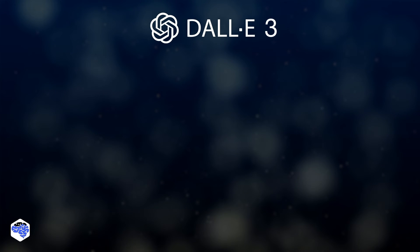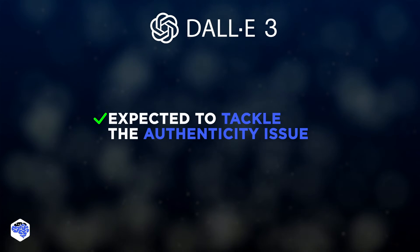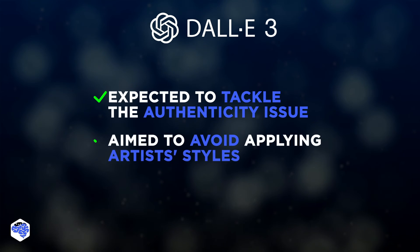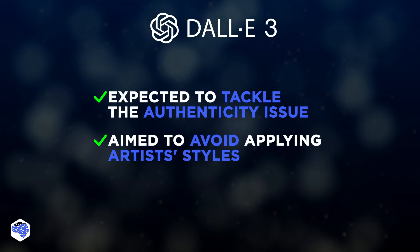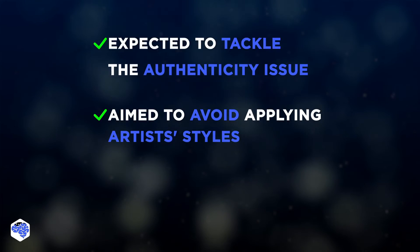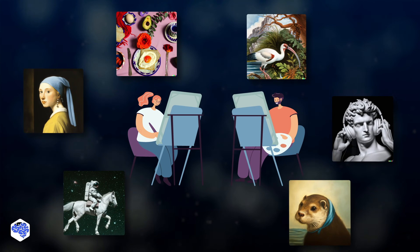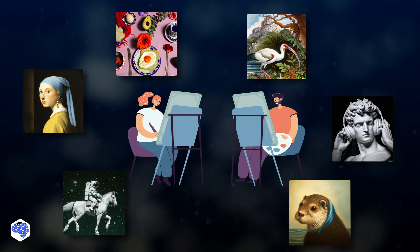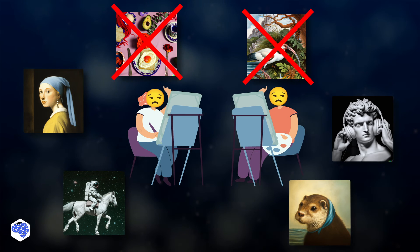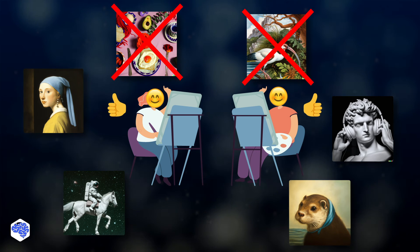DALL-E 3 is also expected to better tackle the authenticity issue. Unlike DALL-E 2, which used to copy modern artistic styles, DALL-E 3 is aimed to avoid applying styles of living artists to respect their artwork ownership. The next DALL-E version promises to go even further and block results resembling a specific artist. Besides, artists can request to remove their images from future queries by claiming their rights. That's cool, isn't it?